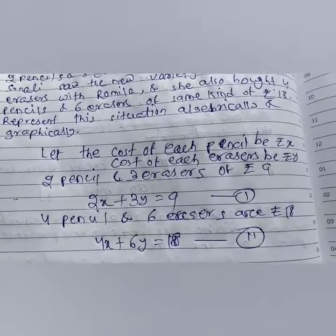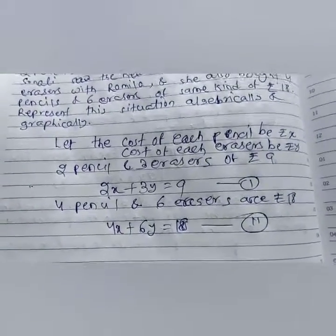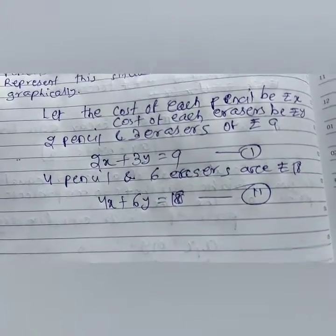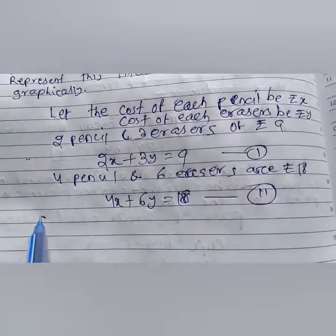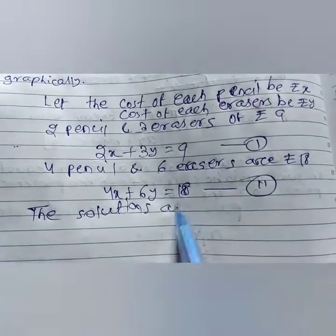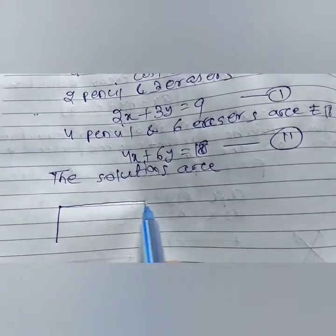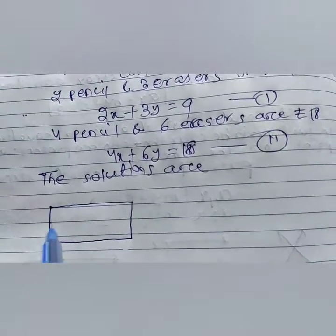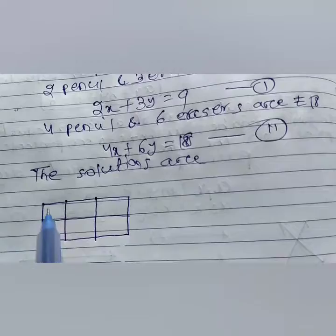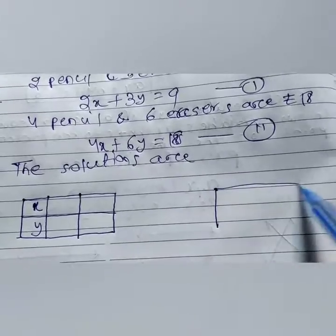For the graphical representation, we have to get the solution of these two equations. We draw a table for each equation. Minimum how many points are required to draw a line? Everyone knows — minimum two points are required to draw a line. We make one table for equation 1 and one for equation 2.